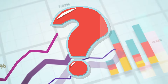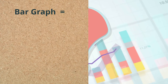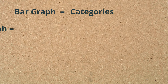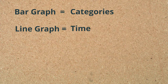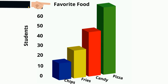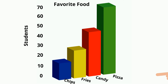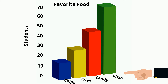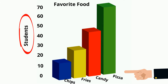A bar graph works well for categories. So let's take a look at this bar graph. Notice it's the favorite food of students. Notice that you have categories: chips, fries, candy, or pizza. And then you have the number of students. So they are categories.